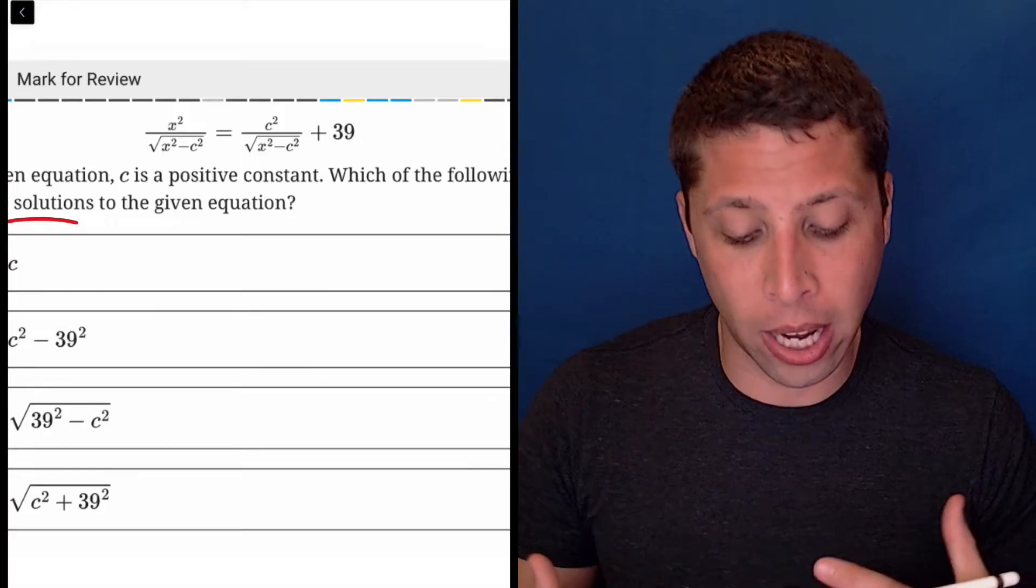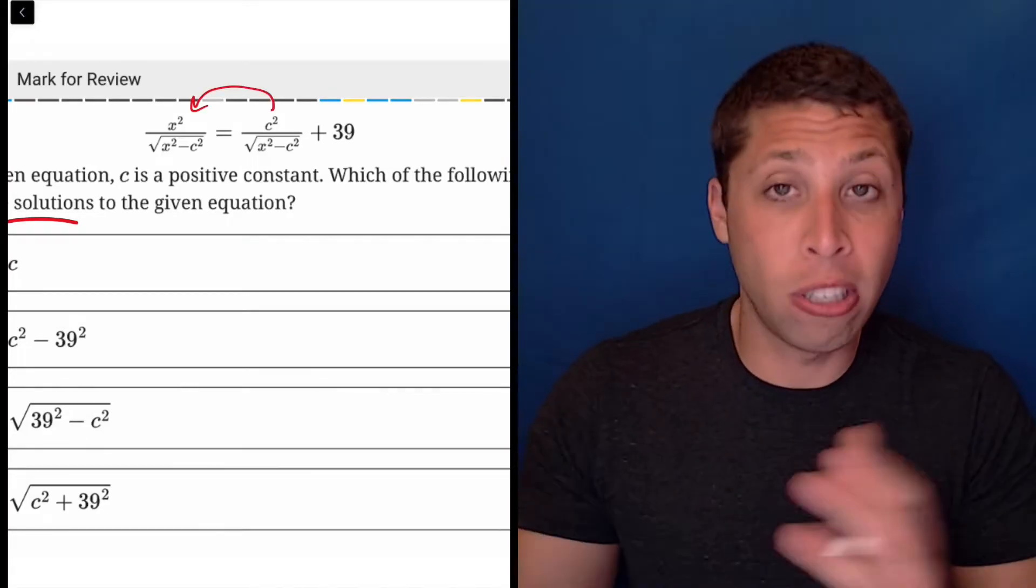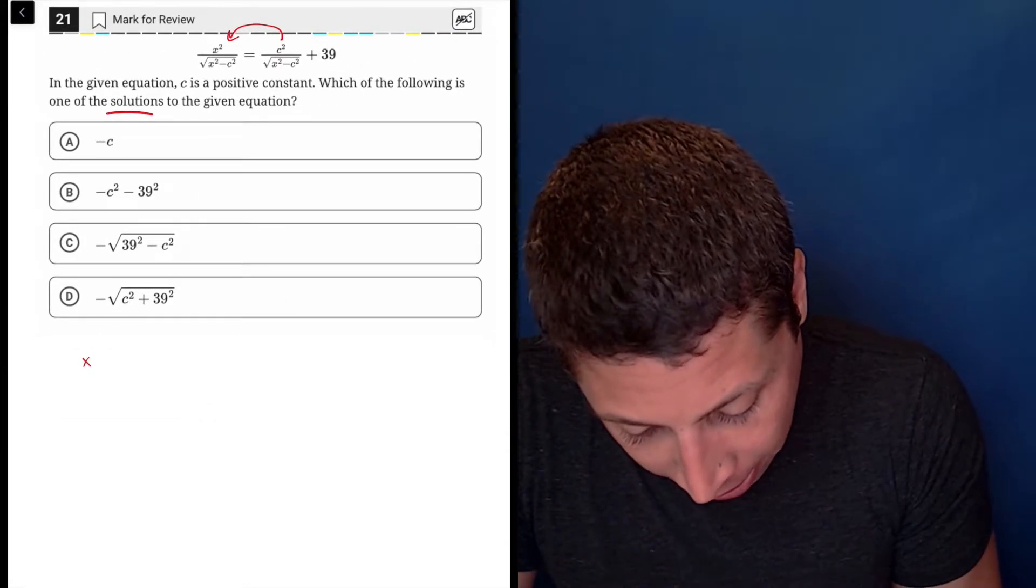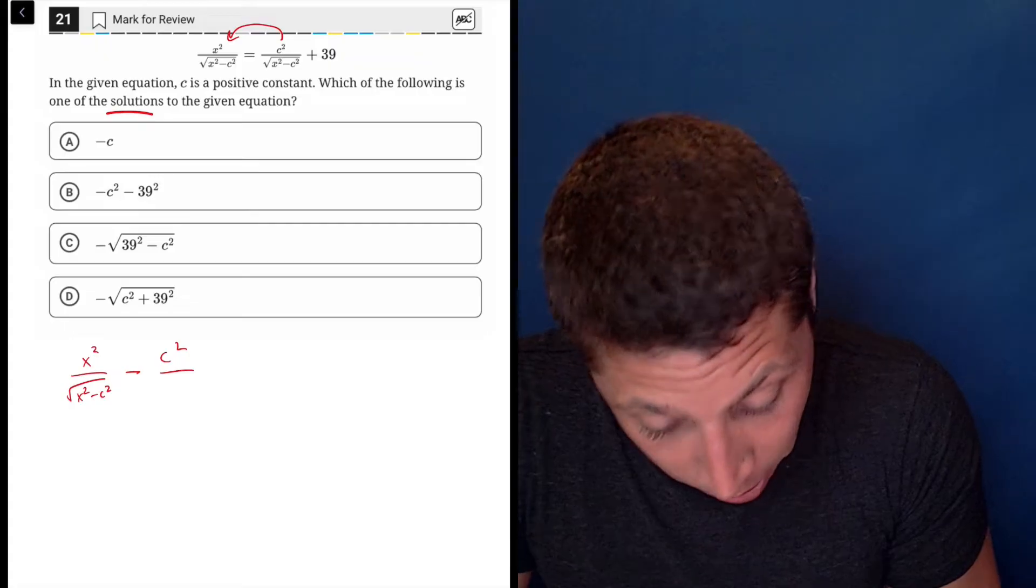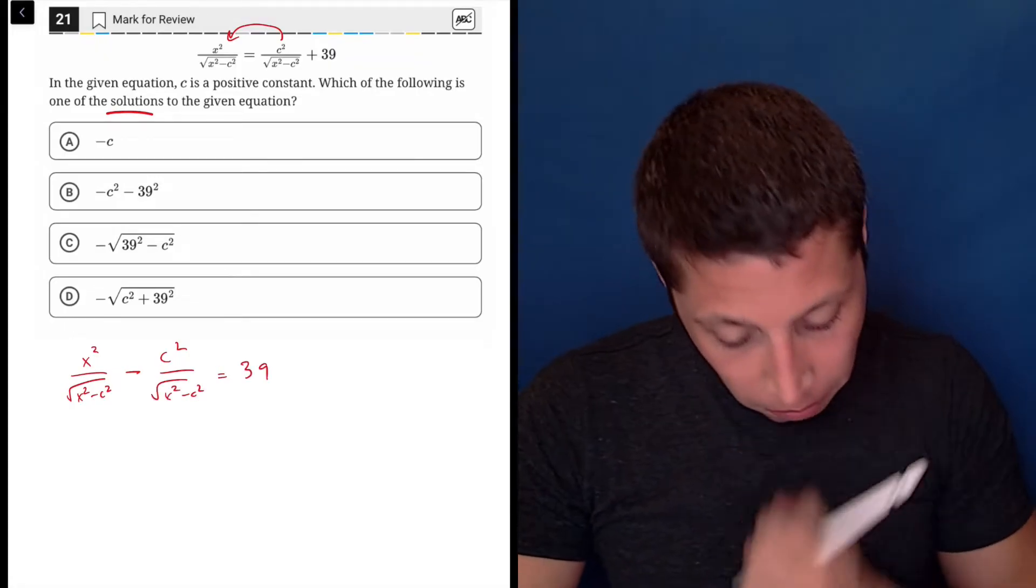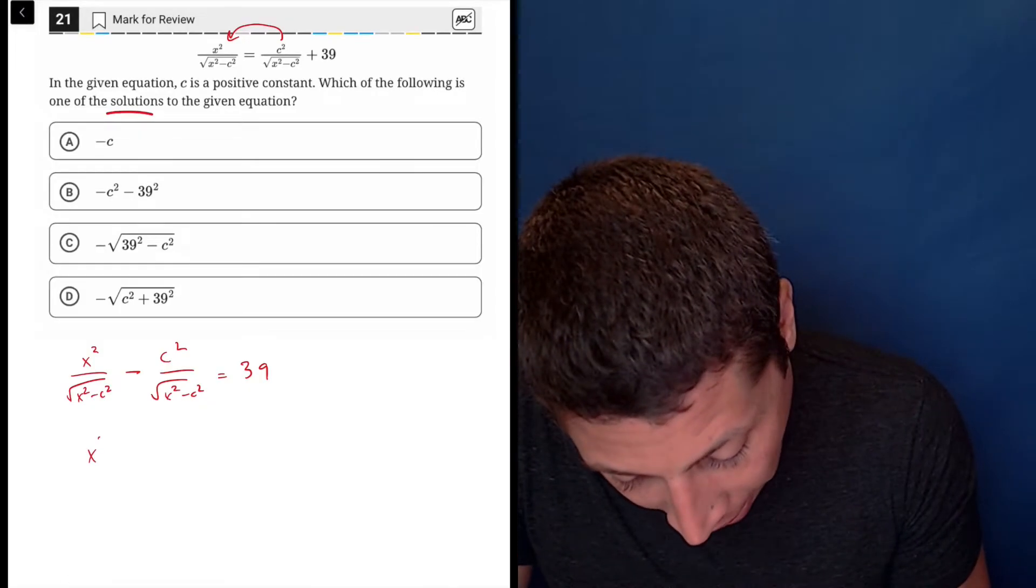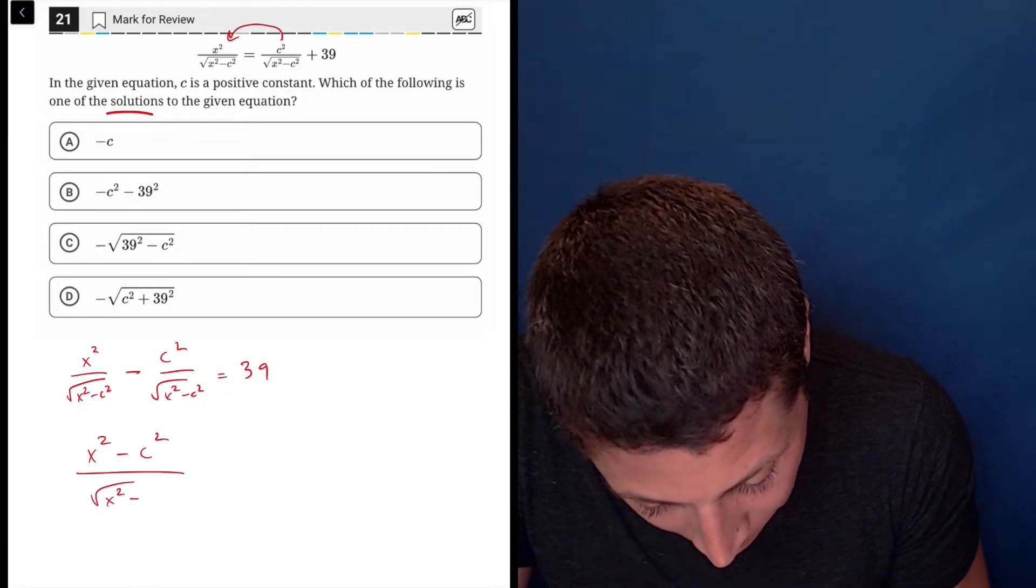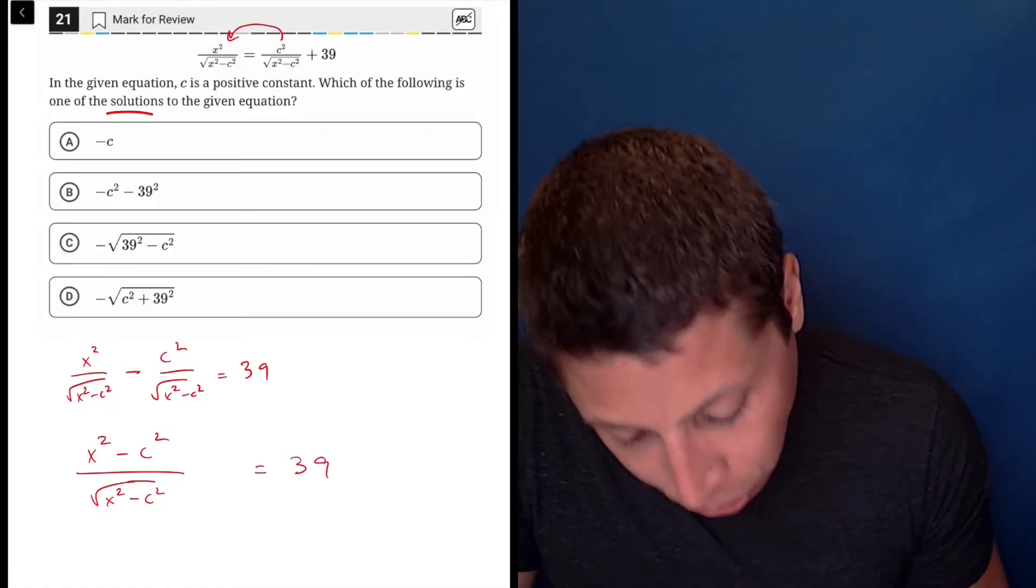So what I might do here is just kind of like move this term to this side so that I can actually subtract them and combine these two fractions into one. So what's going to end up happening is I'm going to have x squared over the radical x squared minus c squared minus c squared over radical x squared minus c squared is equal to 39. Then, because they have the same denominator, I'm just subtracting, I can combine them and I end up with x squared minus c squared all over the square root of x squared minus c squared, and that is equal to 39.